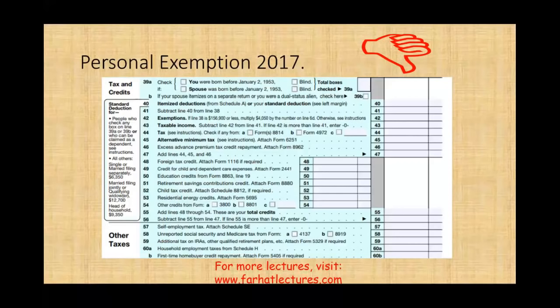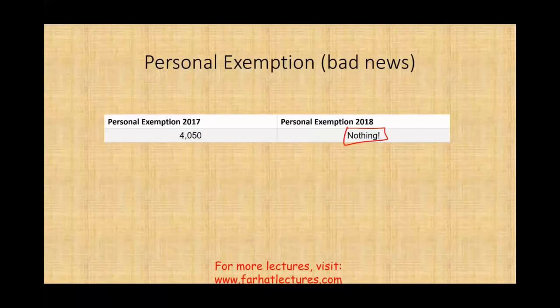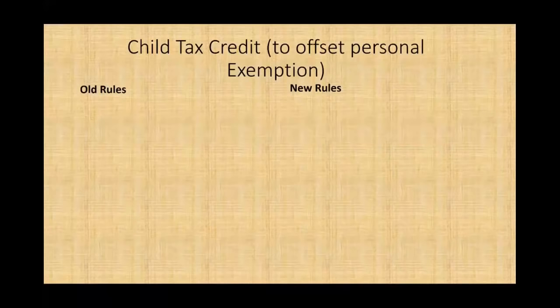We also used to have the personal exemption — for yourself, your spouse, and each dependent claimed on the return, you would get a deduction of $4,050 each. That personal exemption is now gone. What they did was take the personal exemption away and increase your standard deduction. You can't make a definitive statement if this is good or bad until you look at the taxpayer's overall return.